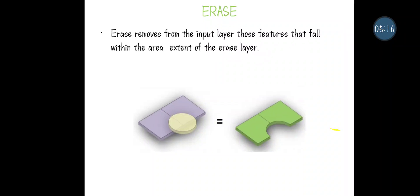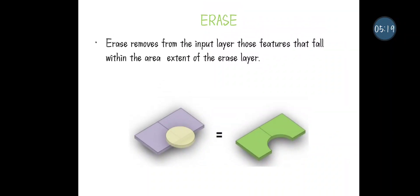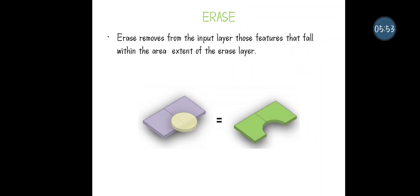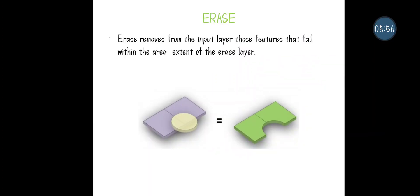The next one is Erase, which is similar to Clip. In Clip, a particular region is displayed in the output. But in Erase, that same defined format — such as a circle — is applied to a feature type, and that particular region is removed from the existing data. So except for the removed region, the rest of the area is given in the output. Erase is used for removing an unwanted region from the feature type.